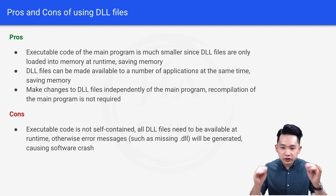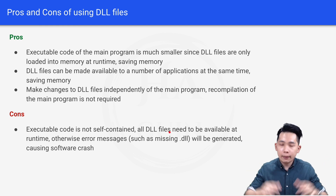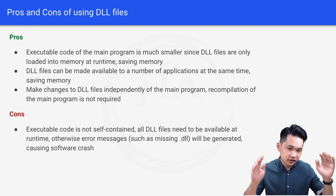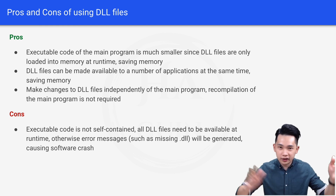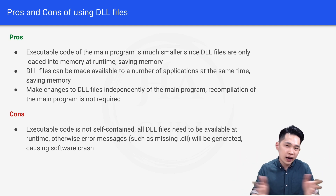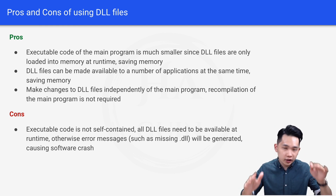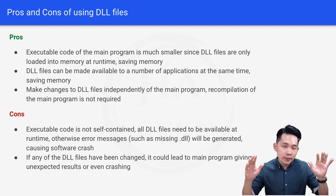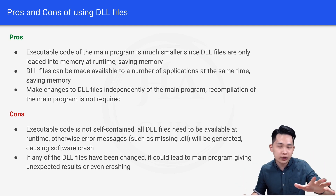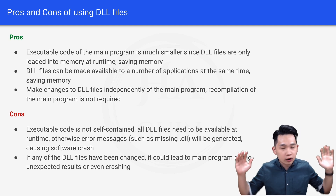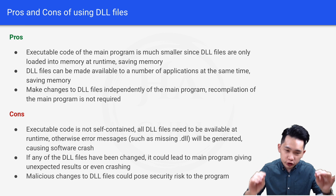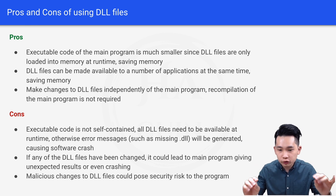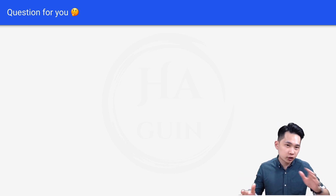The cons of DLL: first, executable code is not self-contained — all DLL files must be available at runtime, otherwise a 'missing .dll' error is generated, causing a software crash. If you've accidentally deleted a DLL from your system, you'll encounter this hard-to-troubleshoot error. Second, if any DLL file is changed, it could cause the main program to give unexpected results or crash — for example, an update to a shared DLL might break compatibility with some of the programs using it. Finally, malicious changes to DLL files could pose a security risk.